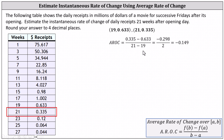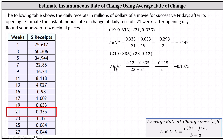Now we'll find the average rate of change from week 21 to week 23 using the same method. The points are (21, 0.335) and (23, 0.12). The average rate of change equals the change in daily receipts in millions of dollars divided by the change in weeks, which simplifies to negative 0.1075.